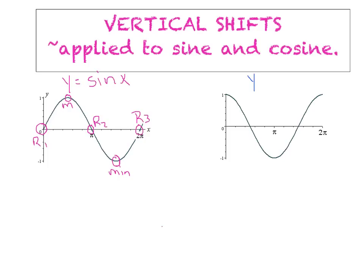By comparison, we have the cosine curve — the cereal bowl — and it starts with its first max. Then it hits the first root, we hit our one and only min, then root number 2, and we finish with maximum number 2. So what we're going to do today is focus on sliding these graphs up and down, and that's what we call a vertical shift.